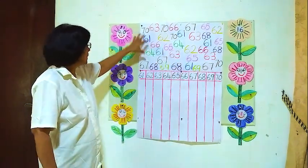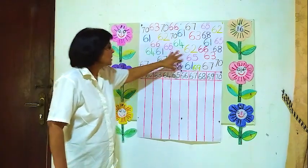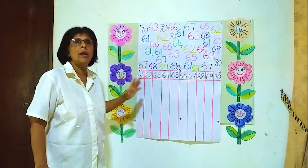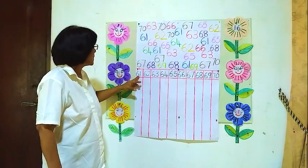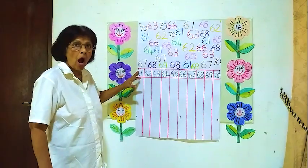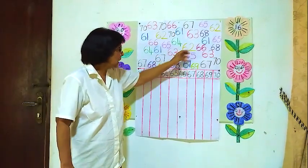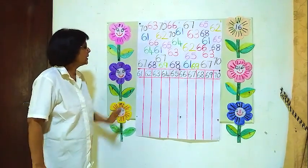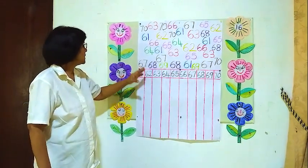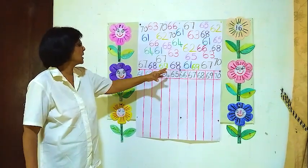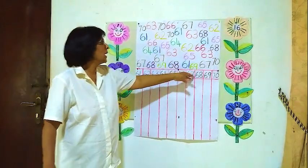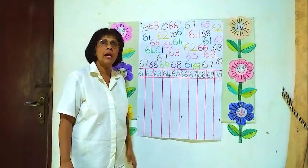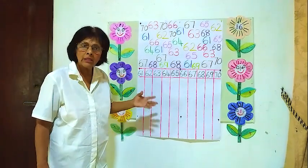Now we have to find how many of each number are here. We have to separately count all the numbers and put them into the correct column. For example, we have to find how many 61's are here and put them into the 61 column. We have to do this for 61, 62, 63, 64, 65, and so on.